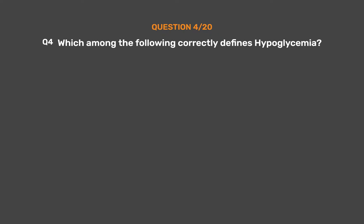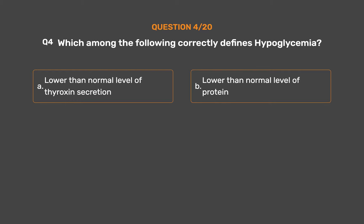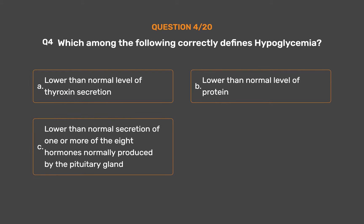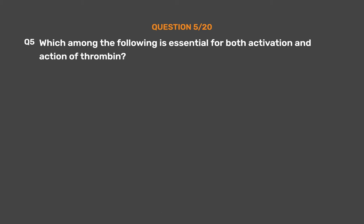Question number four. Which among the following correctly defines hypoglycemia? Option A: Lower than normal level of thyroxin secretion. Option B: Lower than normal level of protein. Option C: Lower than normal secretion of one or more of the eight hormones normally produced by the pituitary gland. Option D: Lower than normal level of blood glucose. The correct answer is Option D: Lower than normal level of blood glucose.